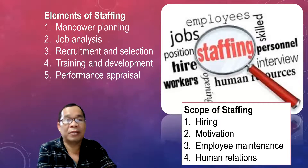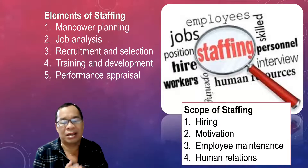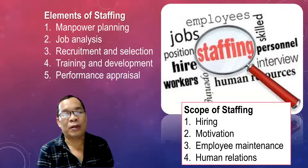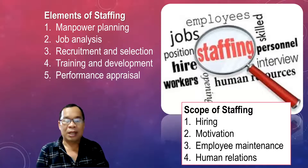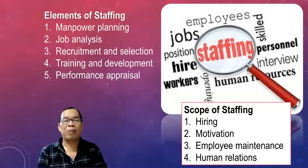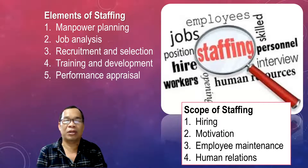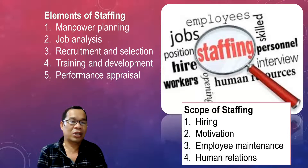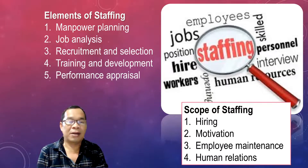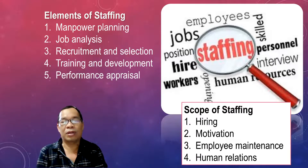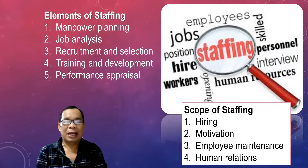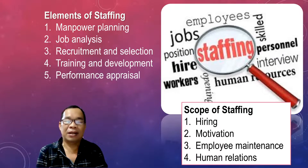These are the elements of staffing. First, manpower planning — there is a need to plan how many people you are going to hire and what is the exact number of people needed to comply with a certain organizational activity. Then job analysis — there is a need to analyze the kind of job you are offering. And there is a need for an effective recruitment and selection process, as well as training and development in order to upgrade everyone who is part of your company. There is also a need to evaluate performance — called performance appraisal.